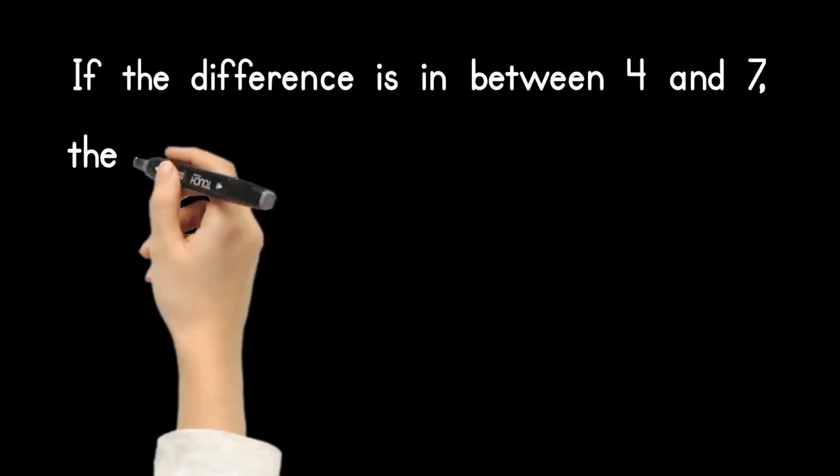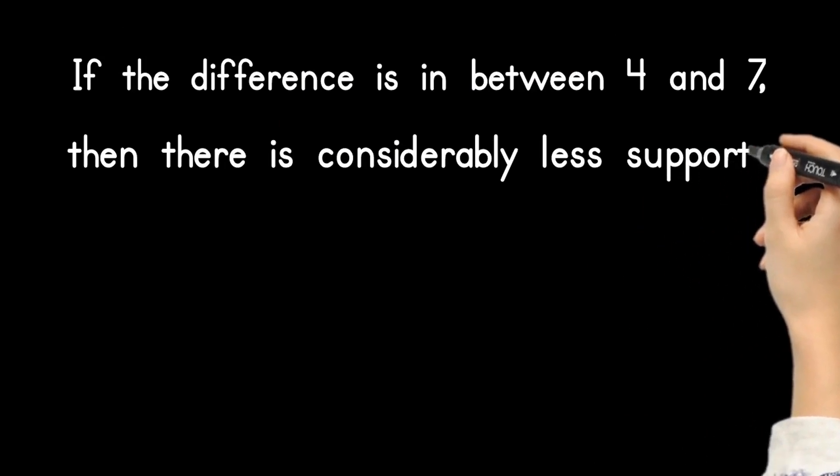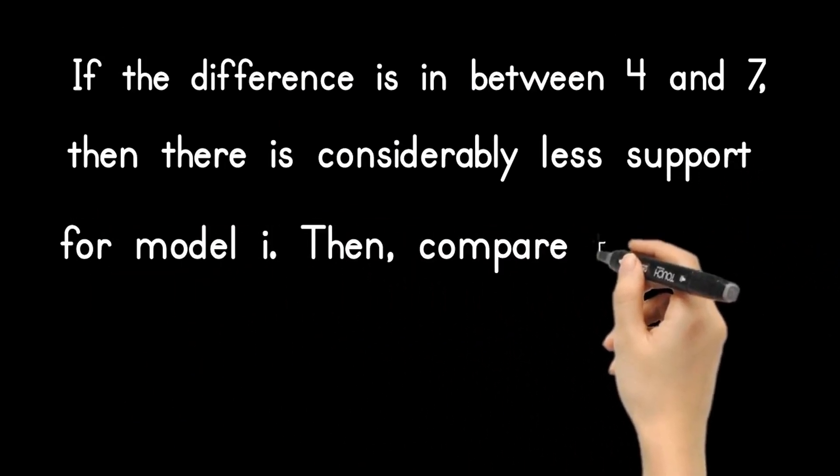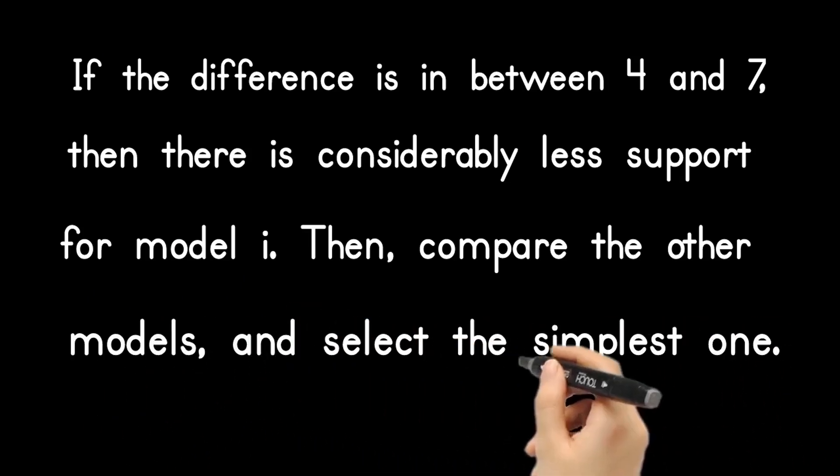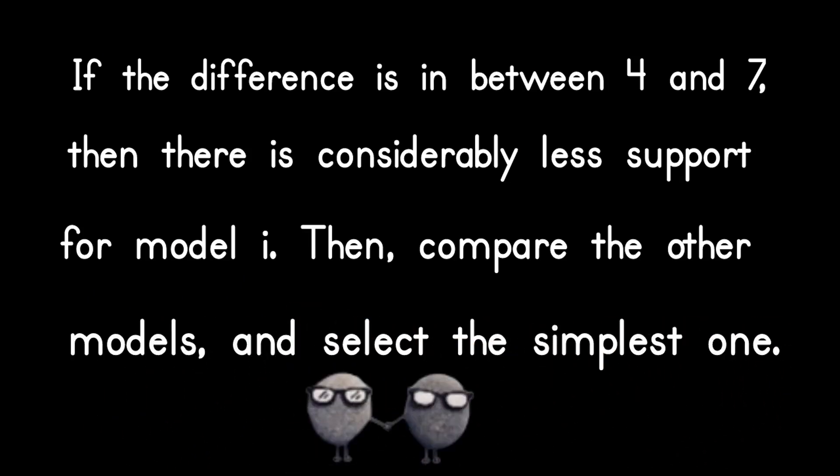If the difference is between 4 and 7, then there is considerably less support for model i. Then, consider the AIC difference of other models and select the simplest one according to the rule of thumb.